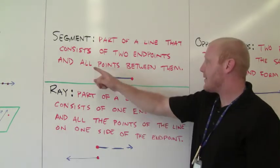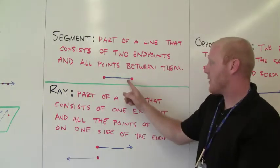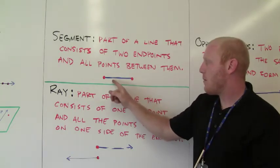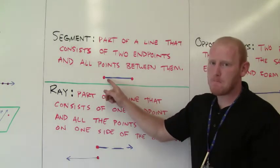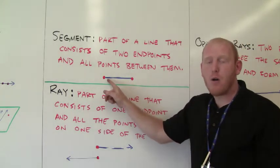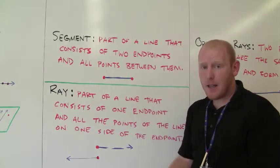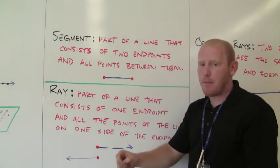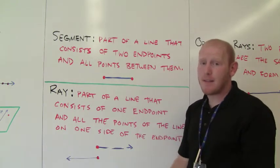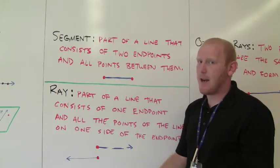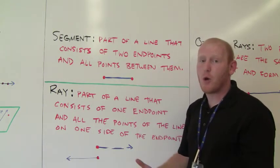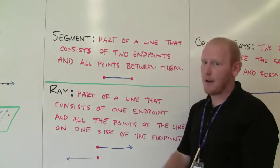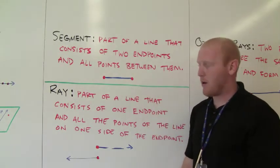It says all points between them — just look at the line, there's an imaginary bunch of points on here. Now, in class, if you were to draw a line on your piece of paper, that's actually a segment, because that line doesn't go forever. So it's a segment — only part of a line contained by two endpoints.